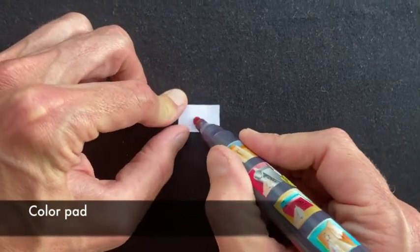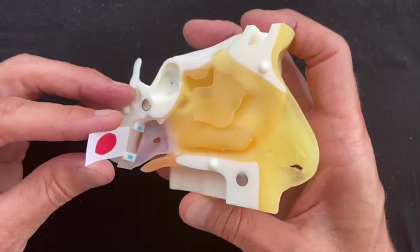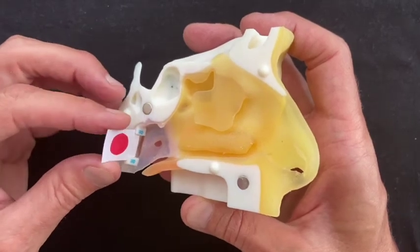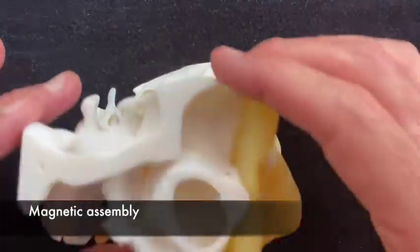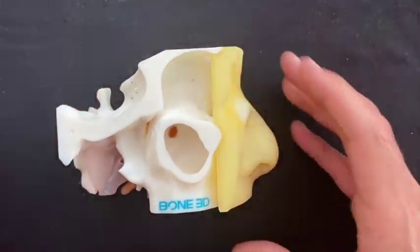Slots on the posterior wall of the nasopharynx allow fitting of a replaceable colored pad. Both parts of the simulator have magnetic contacts so they can readily be assembled.